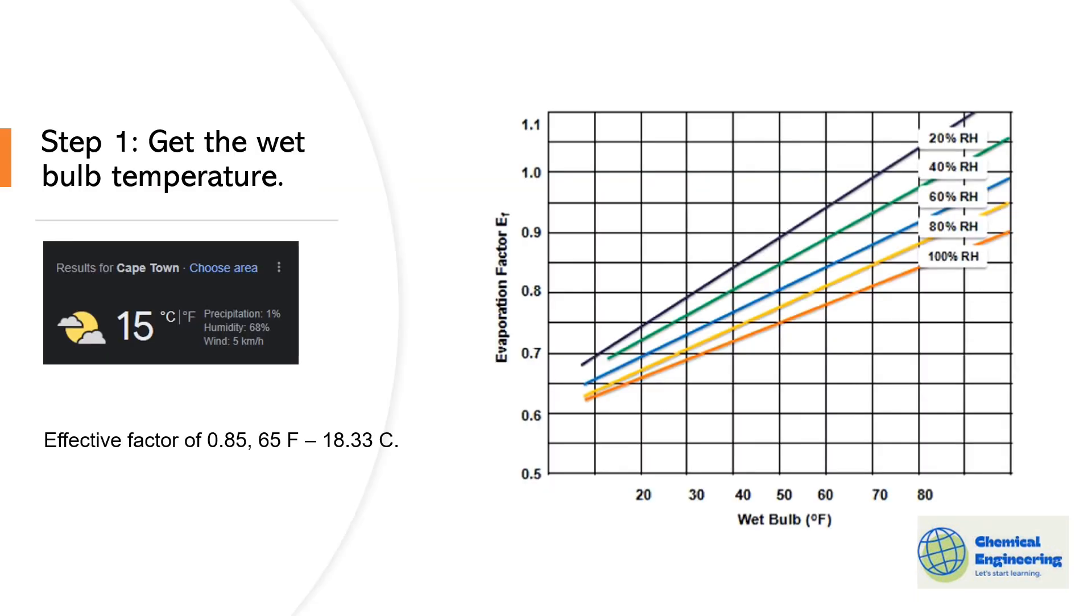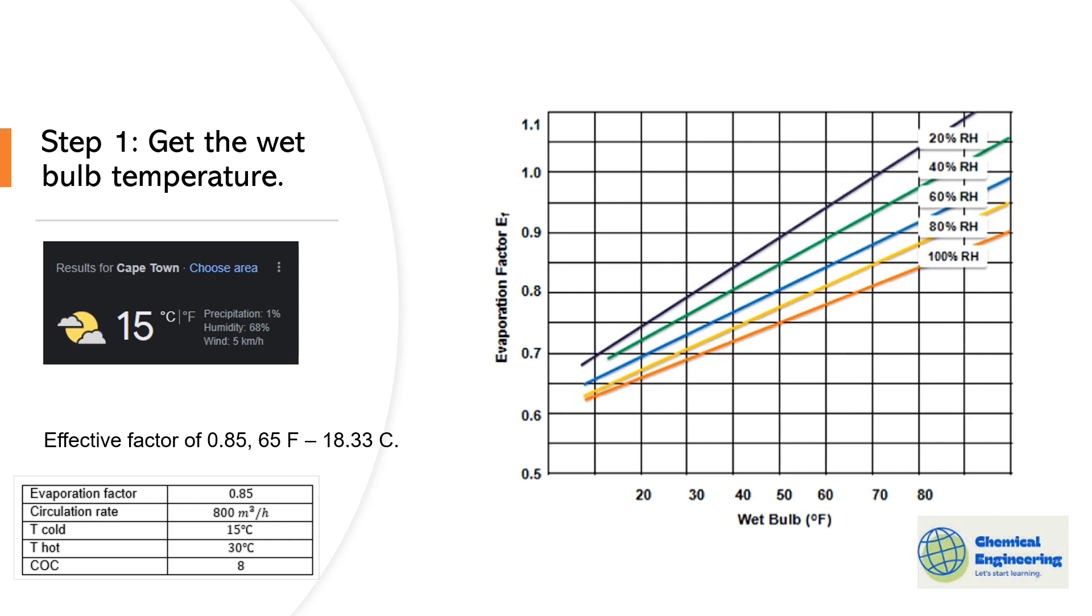Okay now let us be practical. Say we live in a city called Cape Town and the humidity there is roughly around 68. With an estimated evaporation factor of 0.85, relative humidity of roughly 68 percent, we can then assume or go to a graph and get a rough estimate of our wet bulb temperature. If you go on your graph there, you might get 65 fahrenheit which if you convert to degrees celsius can give you 18.33 degrees celsius.